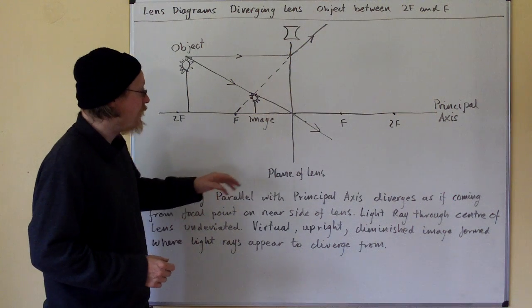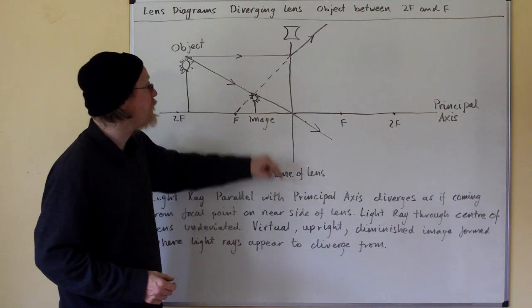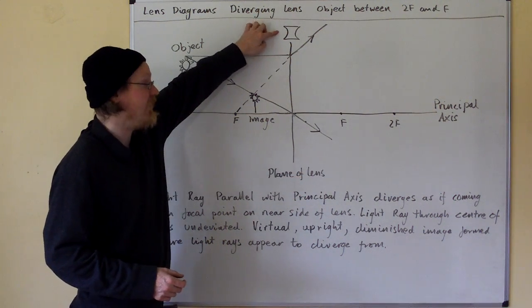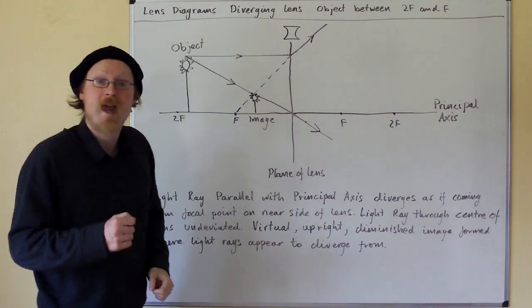Now, the plane of the lens is the same, only this time it's the plane of a diverging lens and the principal axis goes through the middle of it as before.